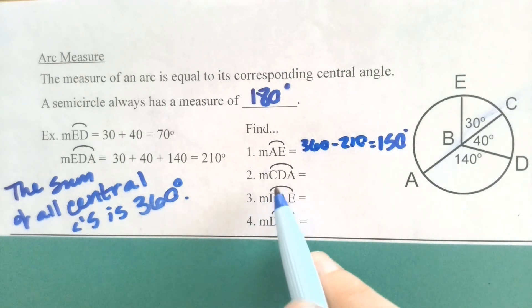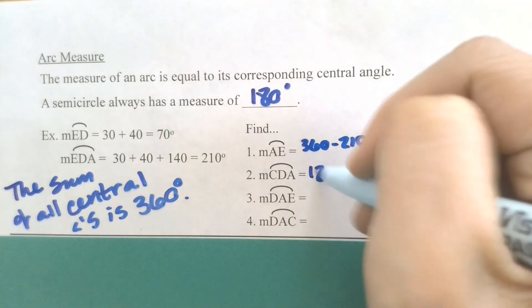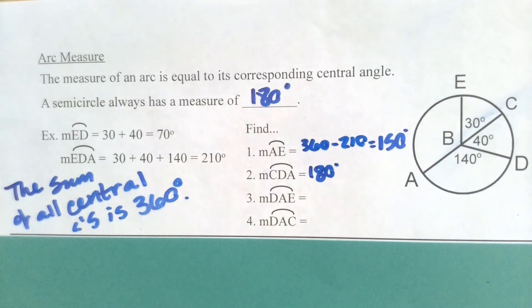For example 2, we've got the measure of arc CDA. Looking at arc CDA, we can add those together, but we also should see that it is a semicircle. So now it adds up to 180. Go ahead and pause the video for a second and try number 3 and 4 on your own.